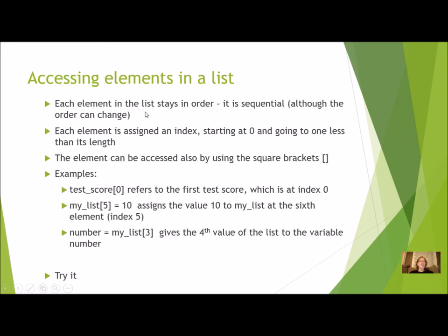Each element in a list stays in the order that it was put in. It is sequential, although you can change the order. Even if you change the order, the list has an order to it. It's always going to be sequential. So each element is assigned an index starting at zero and going to one less than its length. Since it all has the same name, it's all called my_list, but it has multiple values. How do I know which value I want to access? I'm going to do that with the index.